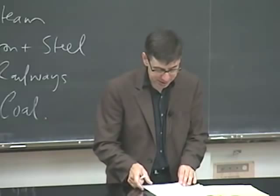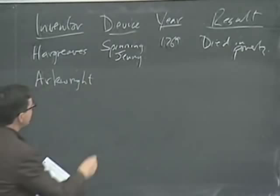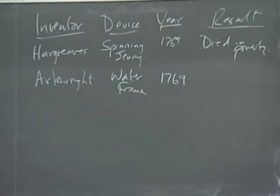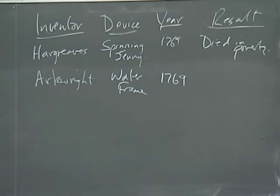In the same year, another innovator called Arkwright introduced a machine called the Waterframe. These dates are always somewhat arbitrary because these machines don't just appear on one particular day — they actually take a while to develop. But it's almost exactly the same year, and that's why if some people want to date the Industrial Revolution, 1769 would be one of the best dates.